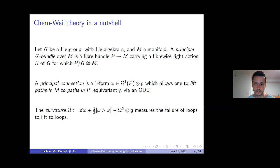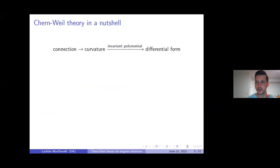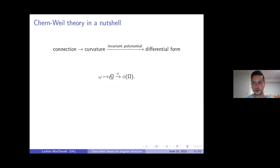These are the basic tools we need to understand Chern-Weil theory. Here's essentially the process to obtain characteristic classes: start with your connection one-form on the total space of your principal bundle, compute its curvature, then apply an invariant polynomial to the curvature. This invariant polynomial on the Lie algebra of the structure group applies to the values taken by the curvature two-form. By the properties of invariant polynomials and the curvature form, these differential forms phi(omega) descend naturally to forms on the base manifold M.